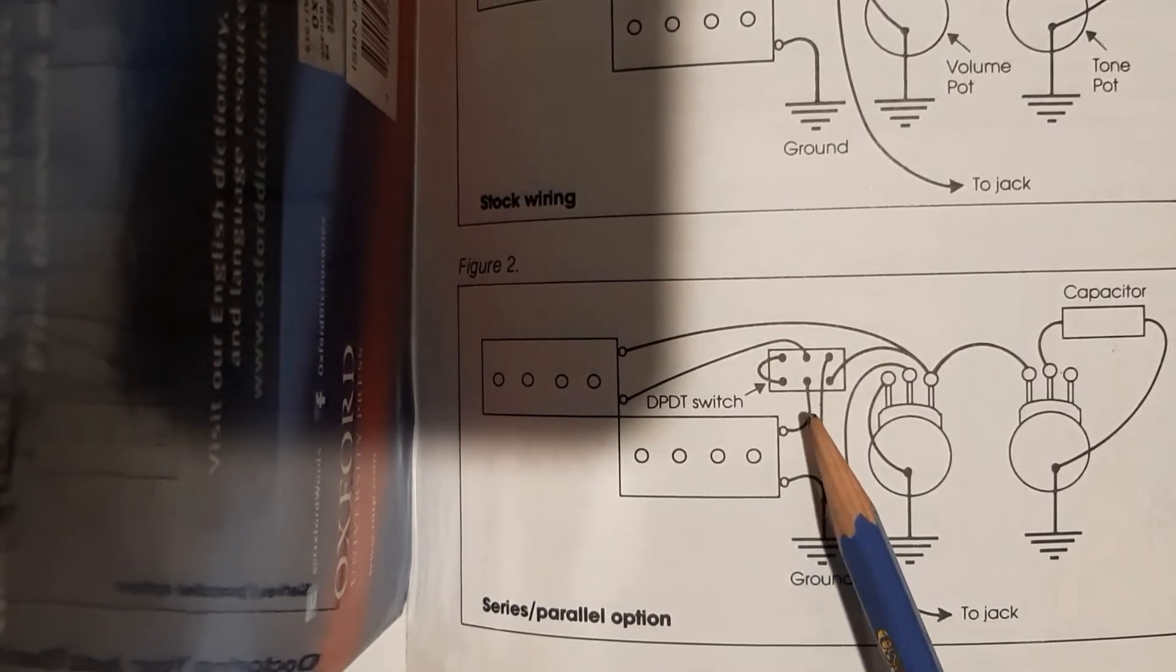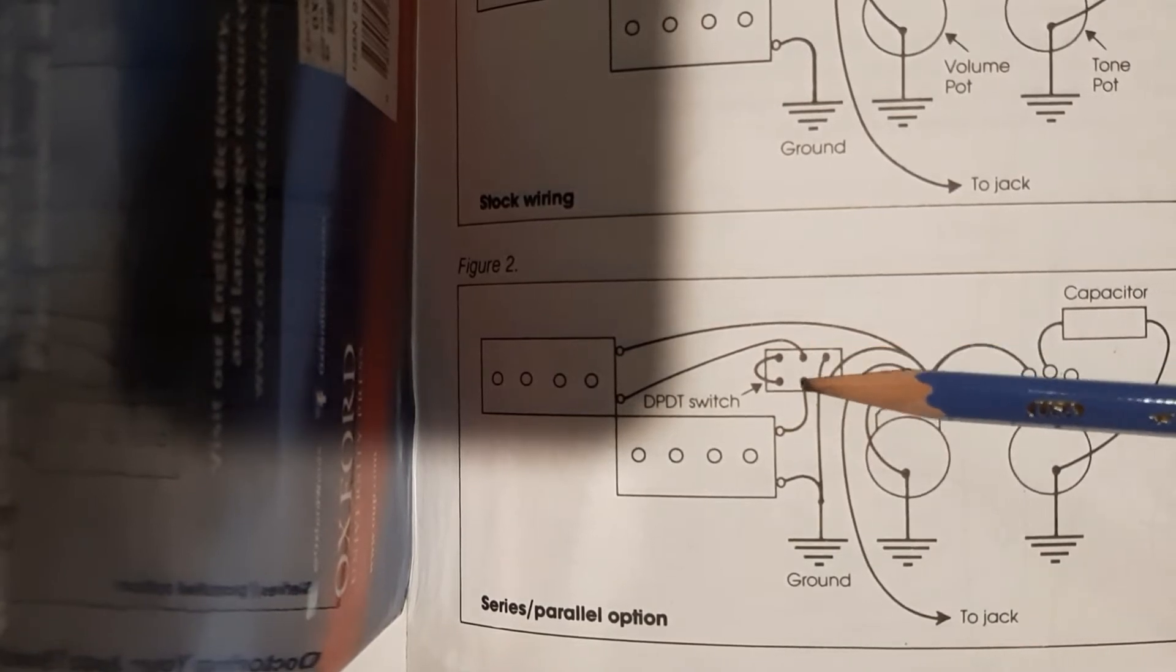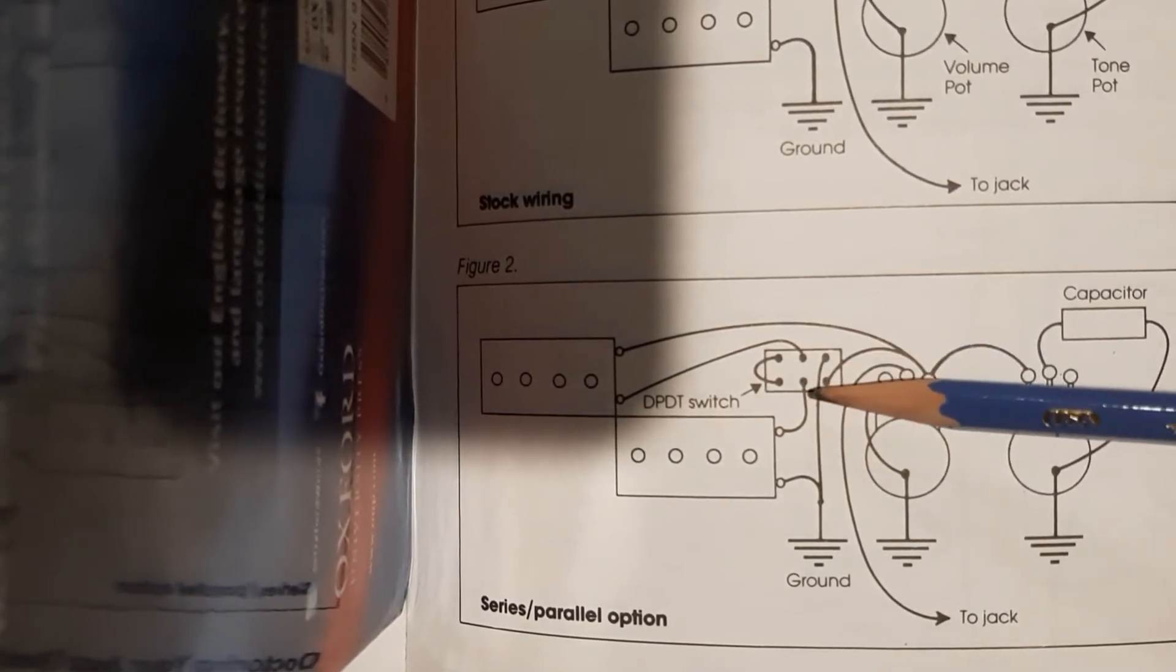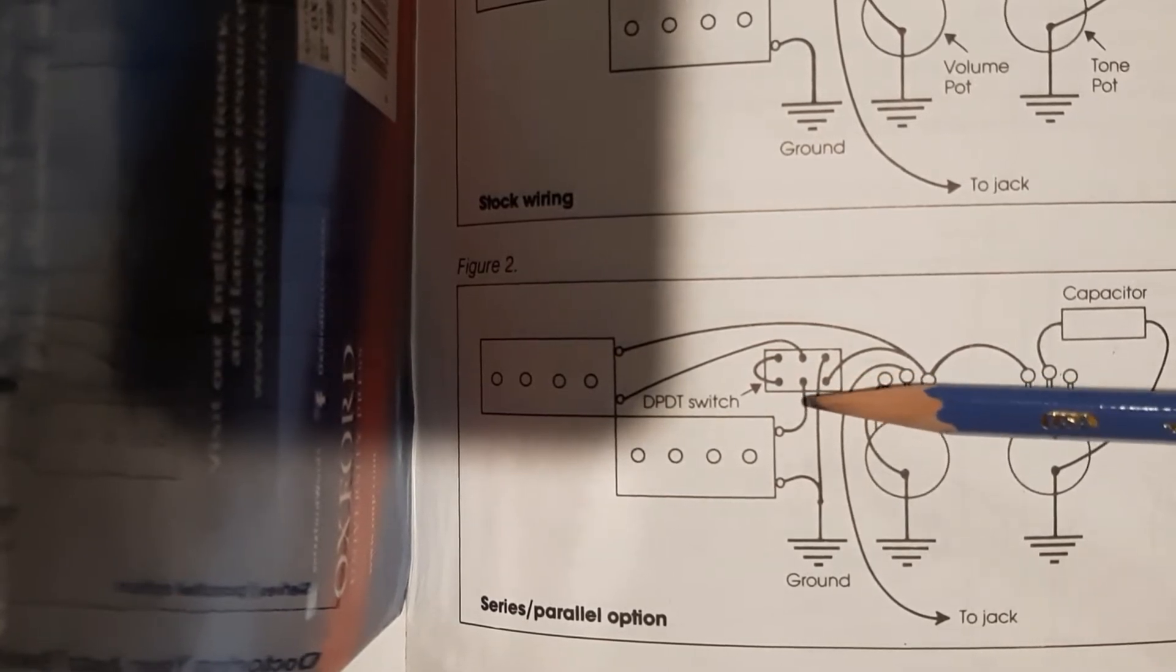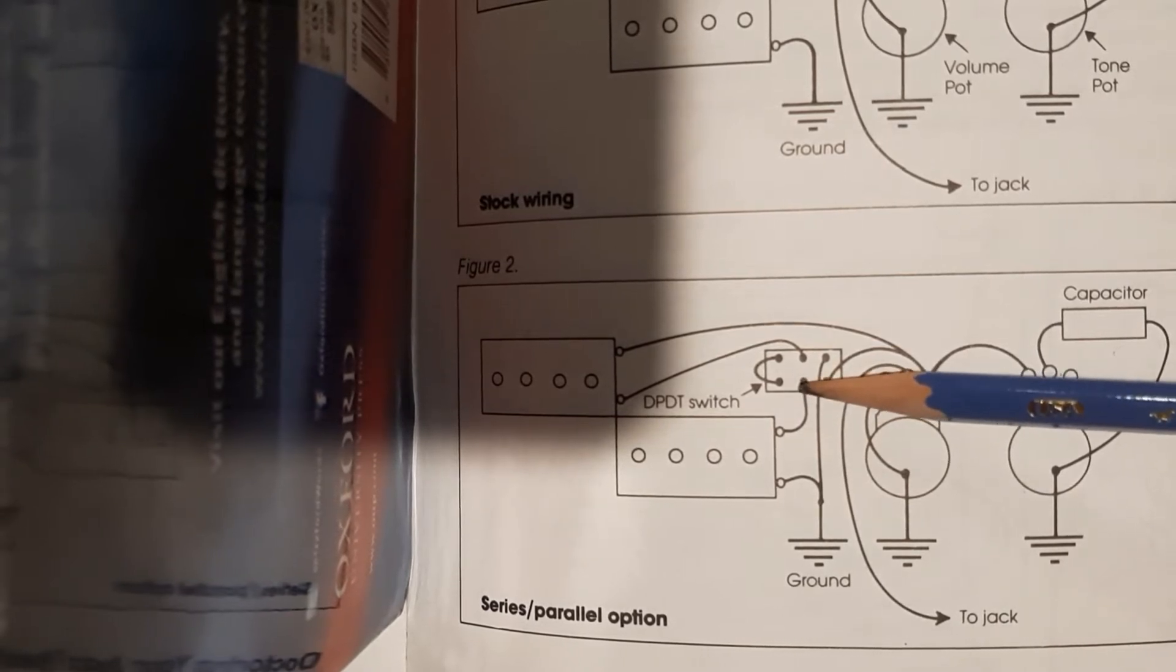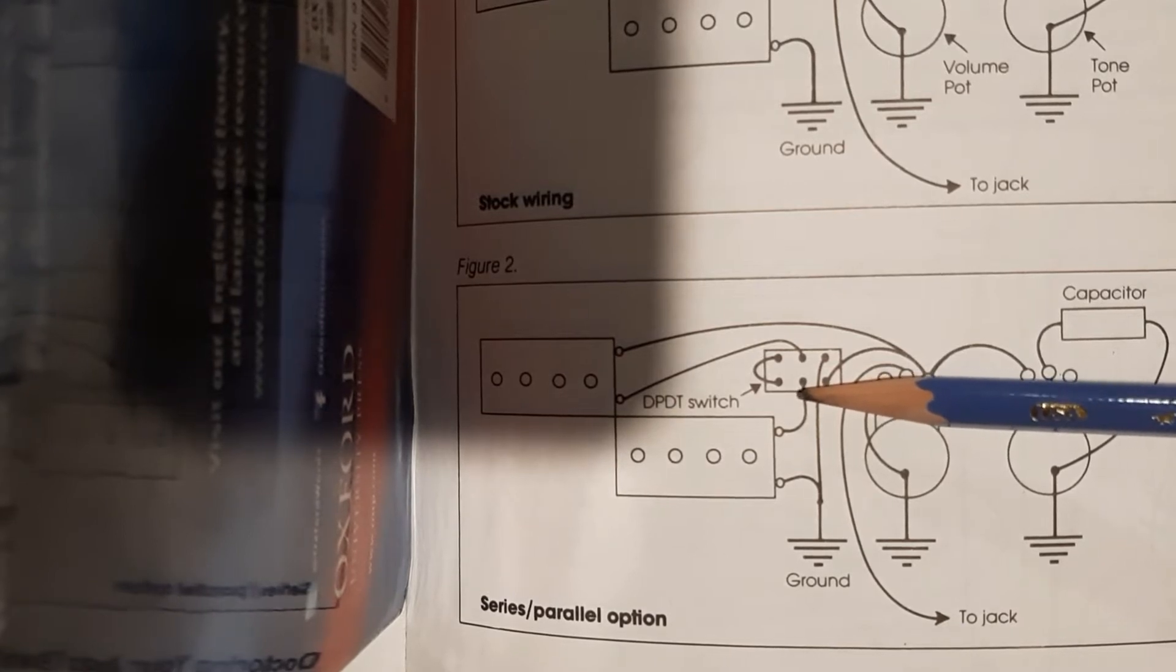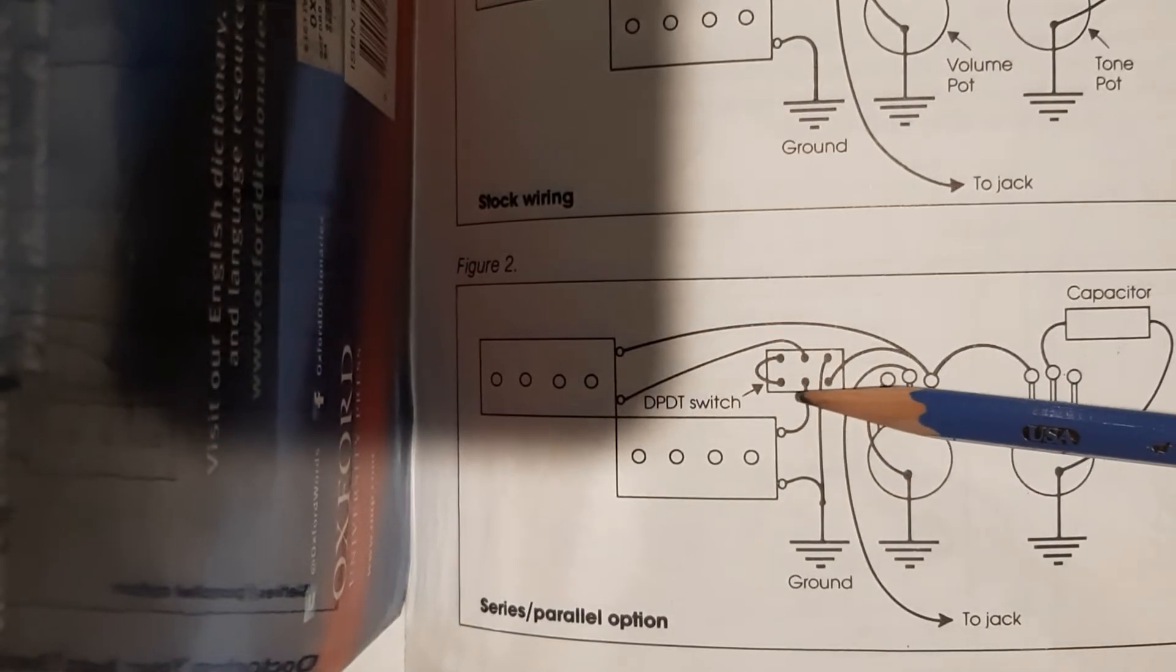The first thing with this kind of switch are the two center lugs on the switch are what you would call the common switch. When the switch is in one position, so this switch only has two positions up or down, let's say in the up position.